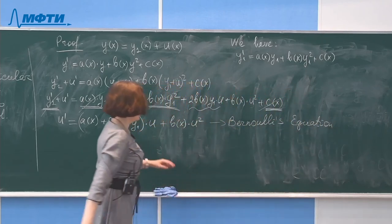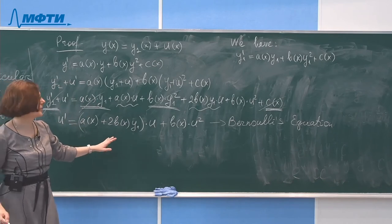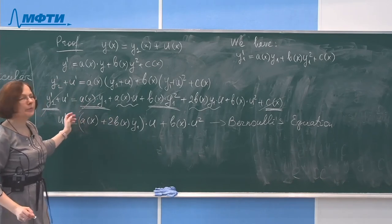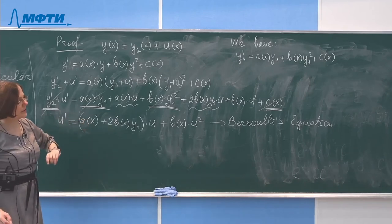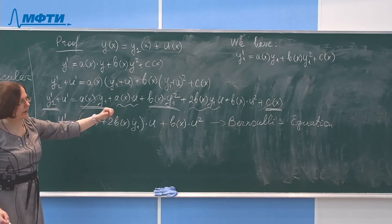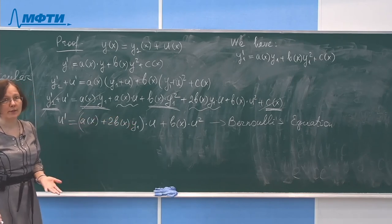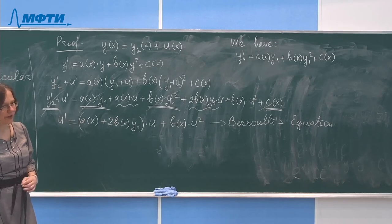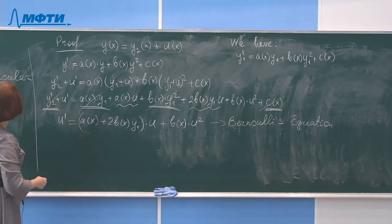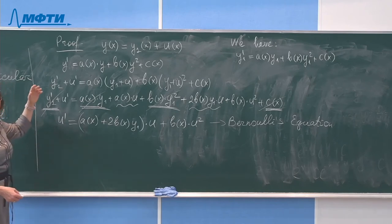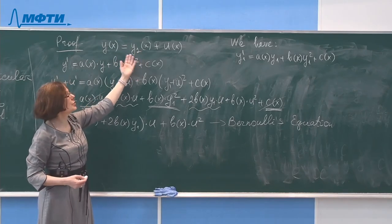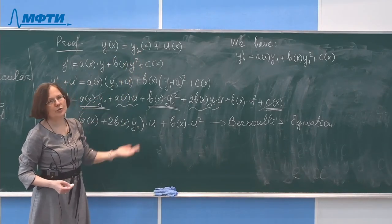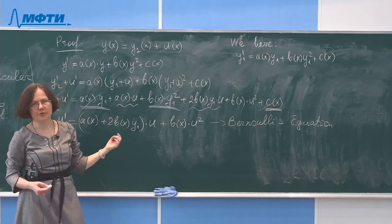Using the algorithm for solving Bernoulli equations, we apply the substitution and solve this to complete the solution. So the theorem is proved: given a particular solution, we are able to find the general solution to the Riccati equation.